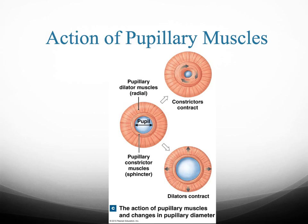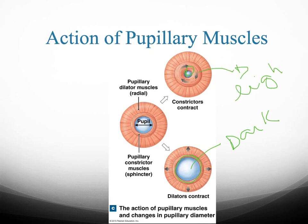This shows the action of the pupillary muscles. When they contract, they constrict the opening. When they relax and dilate, they make the opening bigger. This is what happens when you're in the dark — the pupil dilates — and this is when you're in the light or bright conditions — the pupil constricts.